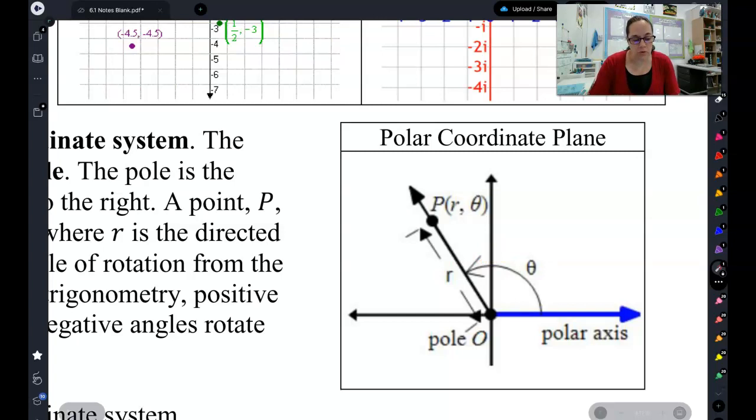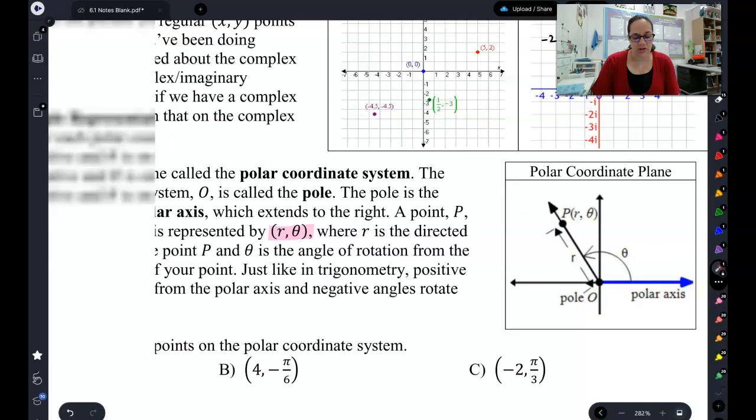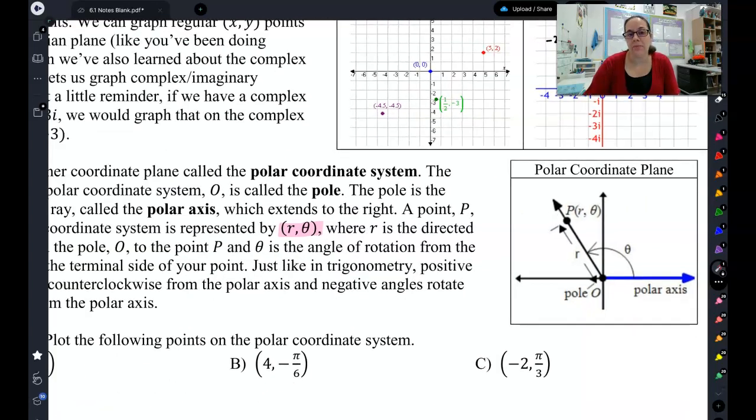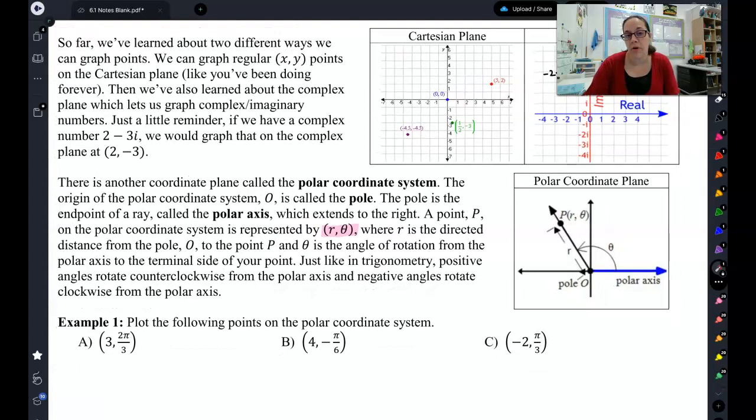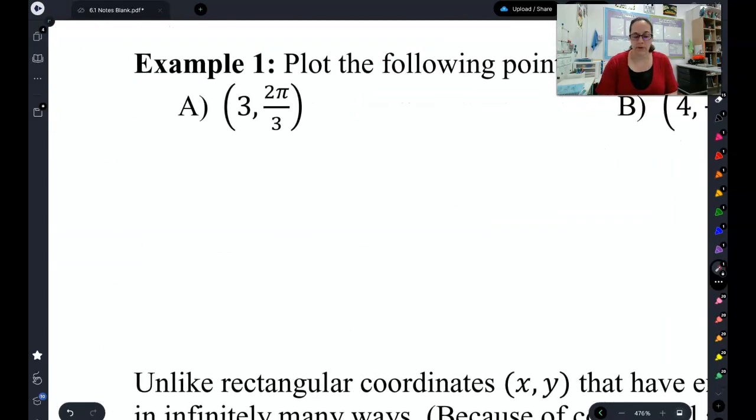So that's usually the real world application of the polar coordinate system. People who fly or do things in the water, sailing, they tend to use the polar coordinate system because it's a lot more helpful to know how far something is from you than where it's at. So, let's talk about plotting these points.